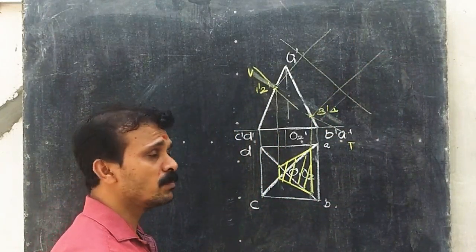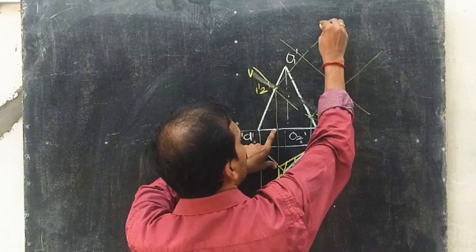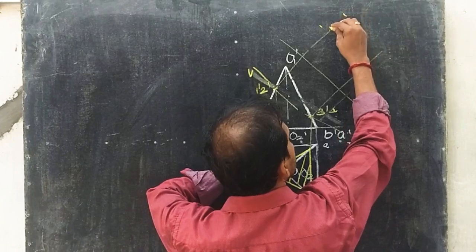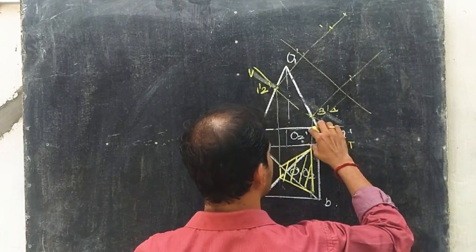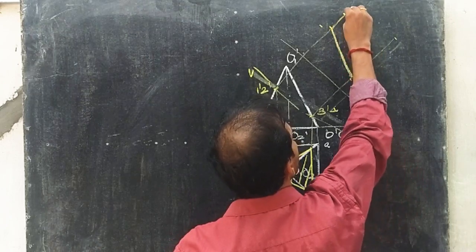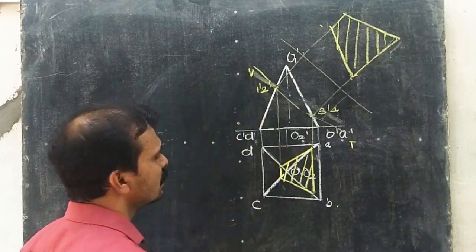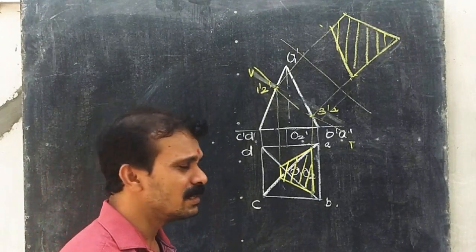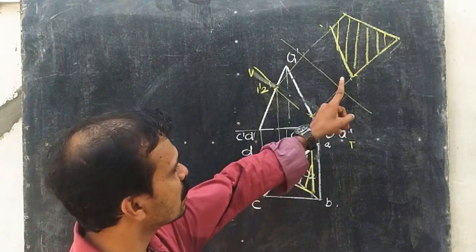We can obtain the true shape by taking this value and intersecting an arc here for getting point one, taking this value and intersecting a distance here. Similarly, by taking this value we will get another point. So this is a true shape of the section. Now, is there any resemblance between this top view of the section and the true shape?